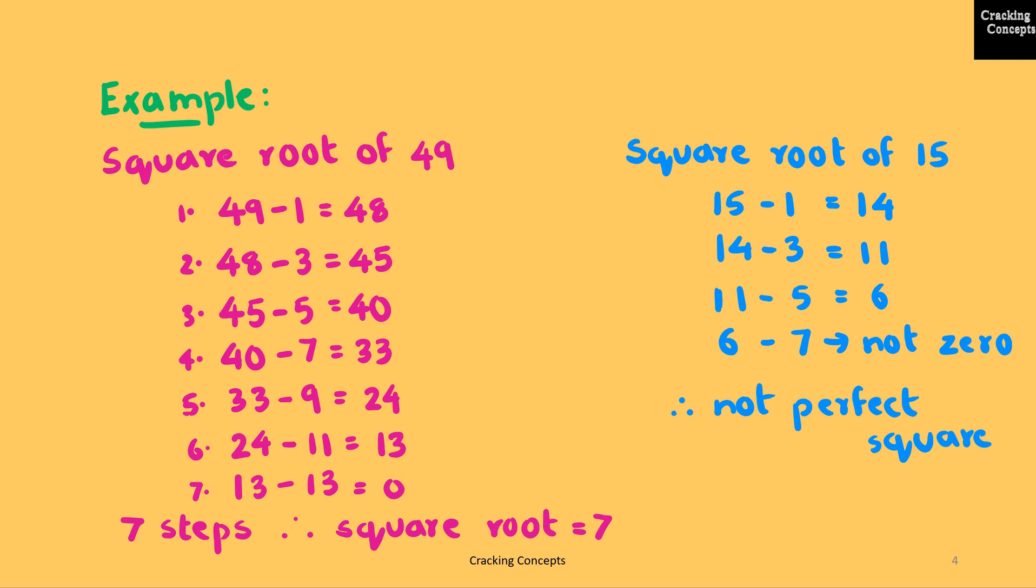First case is square root of 49. The first odd number is 1. Subtracting 1 from 49 we get 48. The next odd number is 3. Subtracting 3 from 48 we get 45. This is repeated until the last step where 13 is subtracted from 13 giving us 0. This happened in the seventh step, so 7 is the square root of 49.